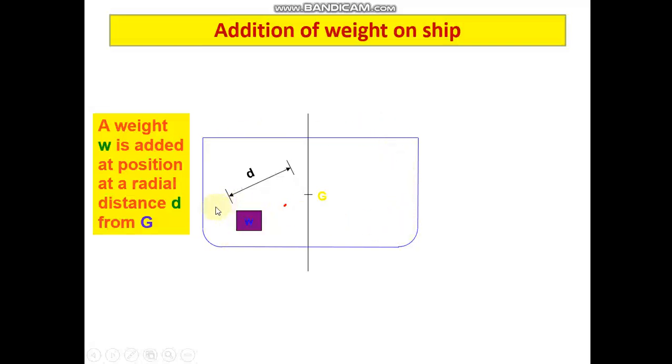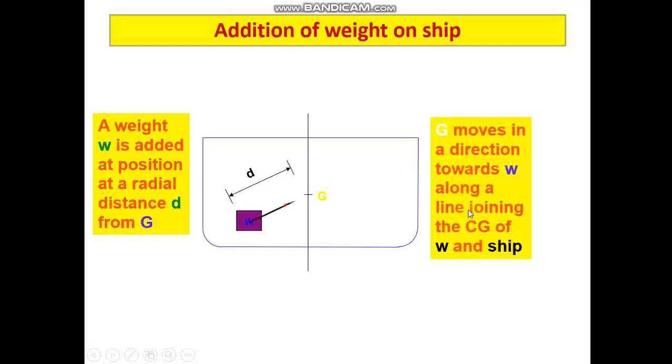As per rule, you are not supposed to carry any fuel or cargo in your double hull. Suppose in the double hull here you can carry ballast water or fresh water. In scenarios like that, your center of gravity G will move in a direction towards w along a line joining the center of gravity w and shift. This is the scenario. G1 is the new center of gravity.